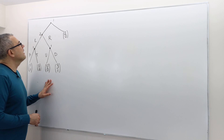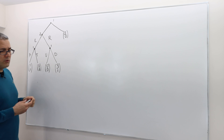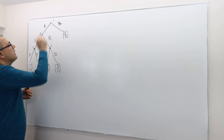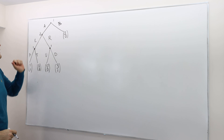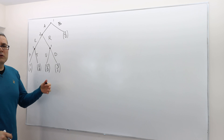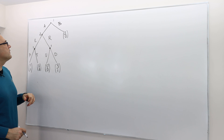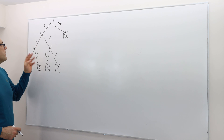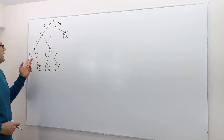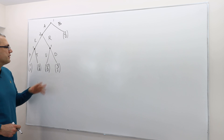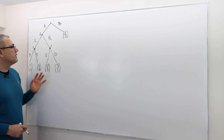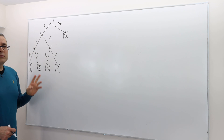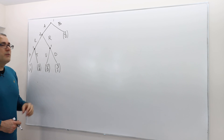Here is one example. Player one moves first — let's call the actions A and B. If he plays B the game is over; if he plays A, it becomes player two's turn to choose left or right. Whatever player two chooses, player one then chooses H or T, or U or D, and then the game is over. This is a game with perfect information because everybody can observe all the previous actions.